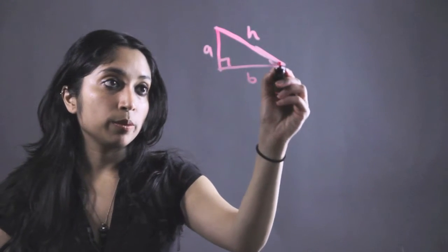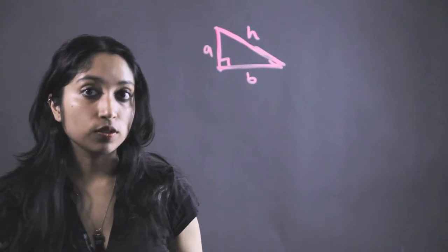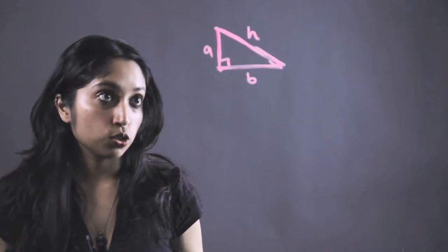And the Pythagorean Theorem is used to find any one of these three sides. Now instead of using the Pythagorean Theorem, we can just use trigonometry.